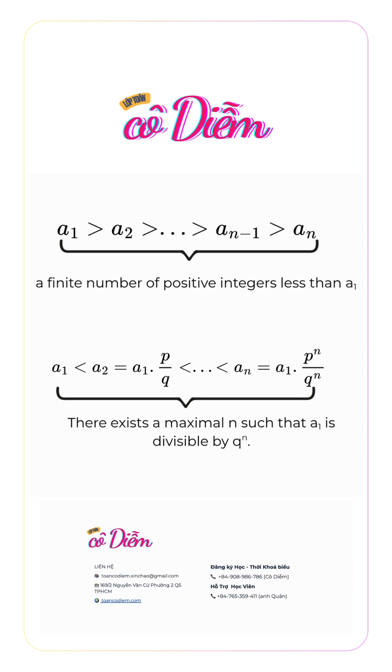Similarly, a strictly increasing sequence of natural numbers, where each subsequent number is the product of the prior number with a non-integer rational constant, cannot be infinite. This is because any integer can be divided by the same number greater than 1 only finitely many times while remaining an integer.